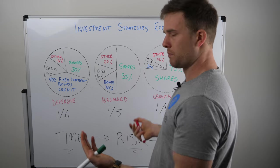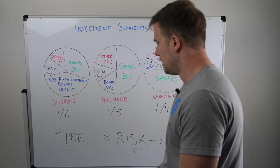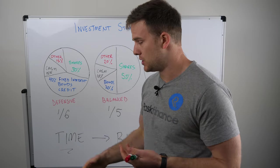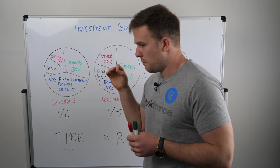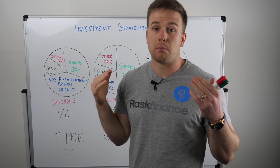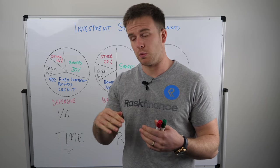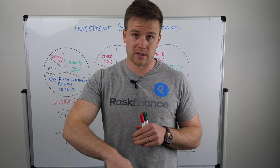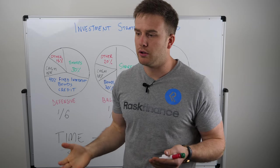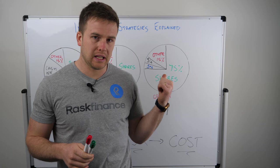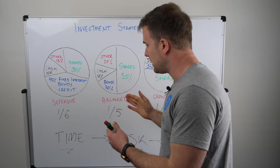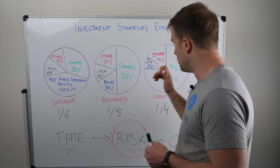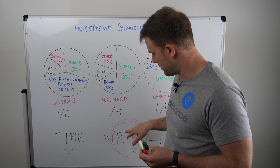So why does this all matter? The number one thing in investing is the old adage: buy low and sell high. Yet what we see with most people is they buy high and sell low. What happens is they think 'I'll go with a growth strategy because I want the best return,' but then the portfolio falls 40% and they panic and sell — missing any potential recovery. So when you're selecting a strategy, it's so important to focus on the risk first, not the potential return.